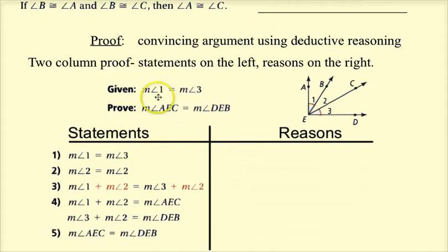The first statement, we always start off with what we're given. So measure of angle one equals the measure of angle three. What's the reason? How do I know that that's true? Because it was given information. So the reason is just given. Very easy.